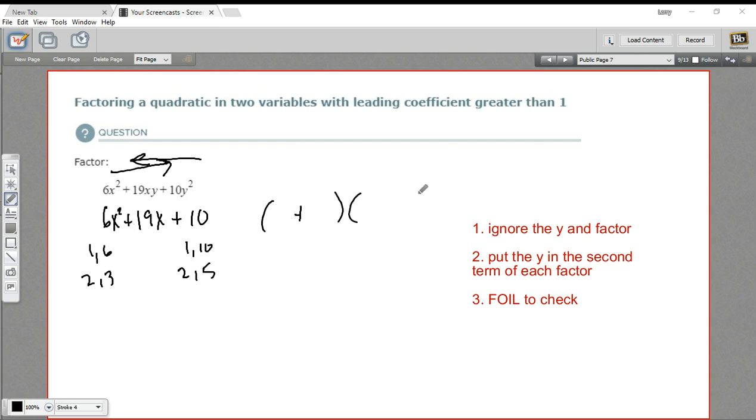And then we've got all positive signs, so that's nice. So I'm going to have something plus something and something plus something. And let's just pick some and see if they work. So let's start with 2x and 3x. And then I'm just going to put in 2 and 5. We want to add up to 19. So let's see.